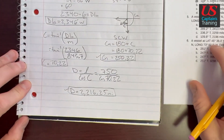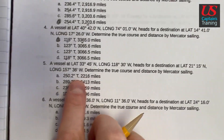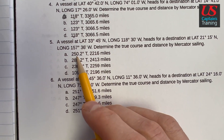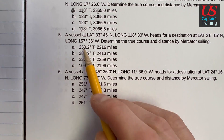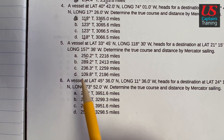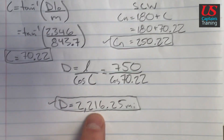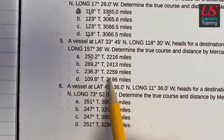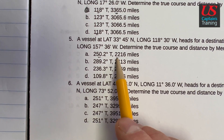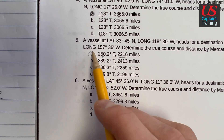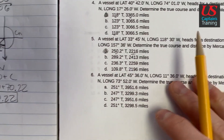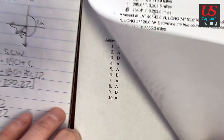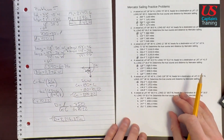Let's check our answers. Problem 5: course is 250.2 — that's exactly what we got. And distance 2216.25 — 2216 — we nailed it right there. Answer A is correct. That is practice problem 5, Mercator Sailing.